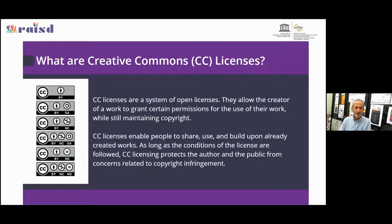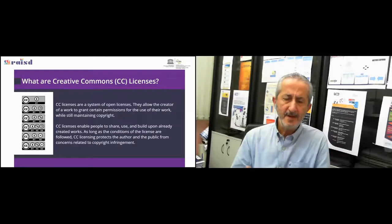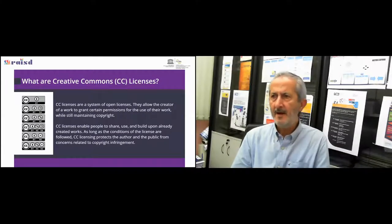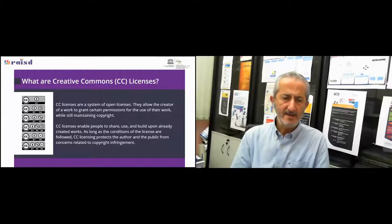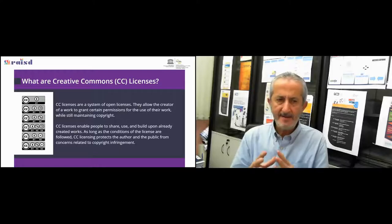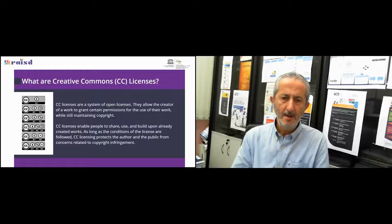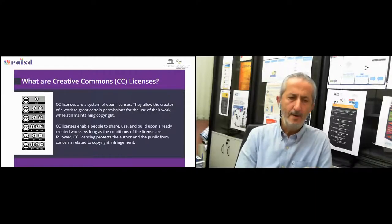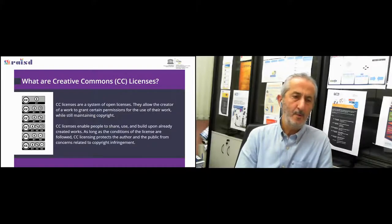Creative Commons has created six different types of licenses. The CC license means that if I have created something — a book, music, whatever — and I want to share it with the world, I can use one of those licenses. The copyright is still mine, but those six licenses enable me to share, collaborate, and build upon that work.